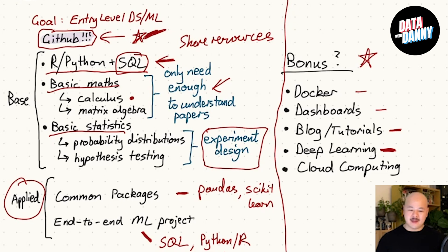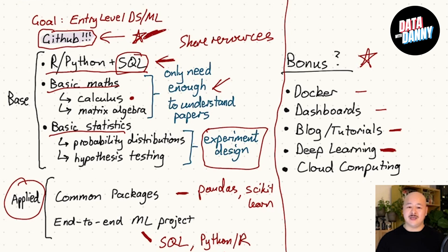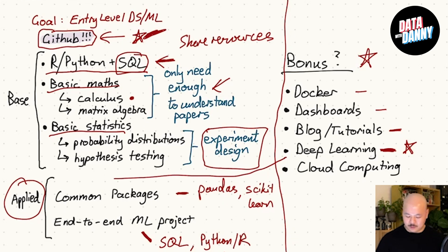Deep learning is a bonus because a lot of the problems we solve in machine learning — especially at an entry level — we don't necessarily default to deep learning straight away. It's much more important to understand the decision tree, logistic regression, boosted trees, and all those traditional machine learning algorithms — having a really good conceptual understanding of what's going on under the hood is much more important than having a lot of deep learning experience. Over time that might change, as deep learning is becoming more and more popular and may eventually become one of the standard applied requirements.